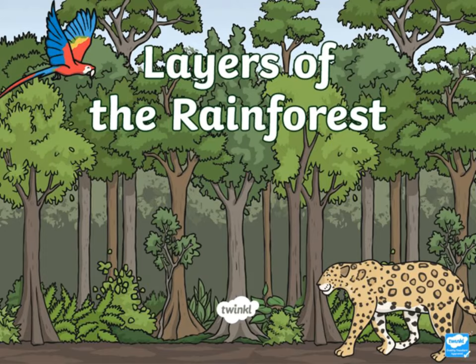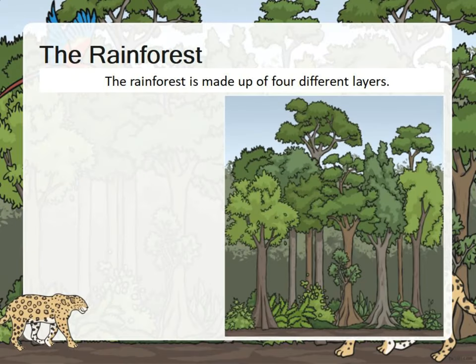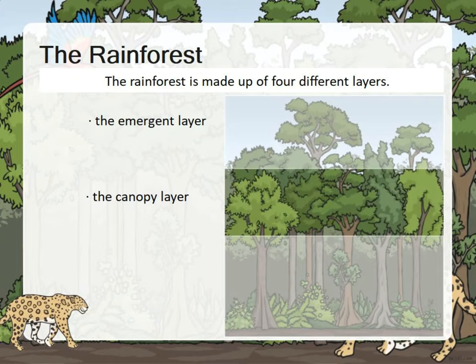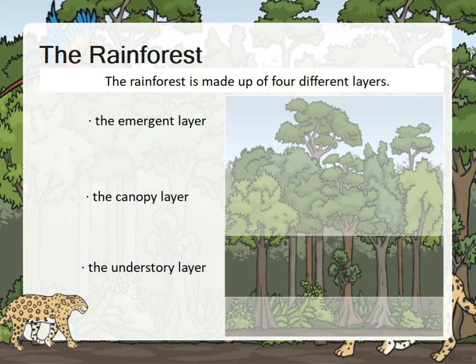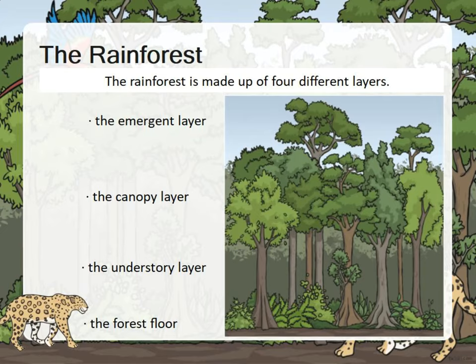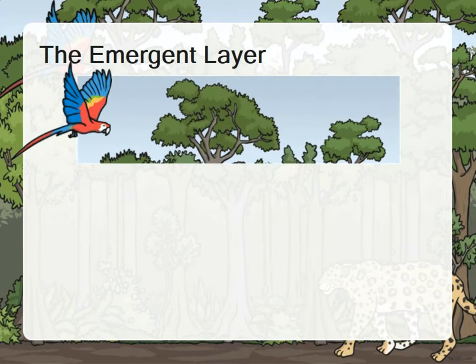Layers of the rainforest. The rainforest is made up of four different layers: the emergent layer, the canopy layer, the understory layer, and the forest floor.